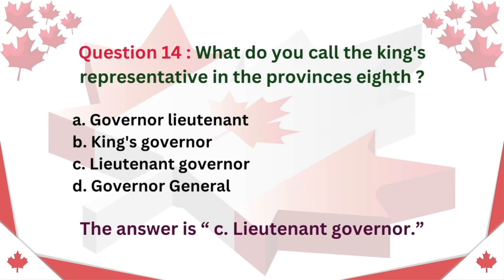Question 14. What do you call the king's representative in the provinces? A. Governor-Lieutenant B. King's Governor C. Lieutenant Governor D. Governor-General. The answer is C. Lieutenant Governor.